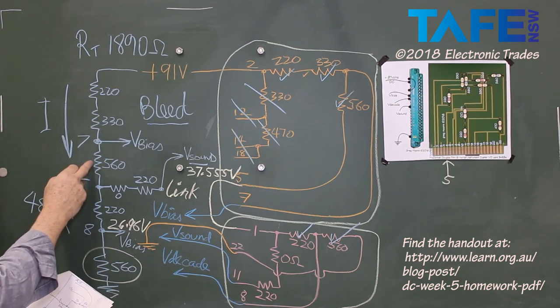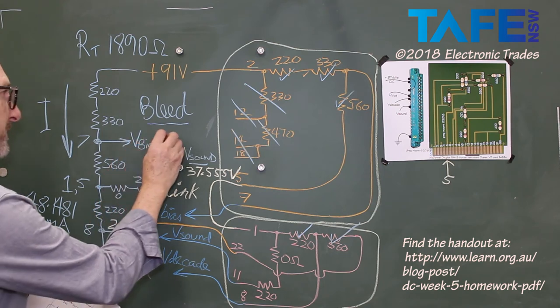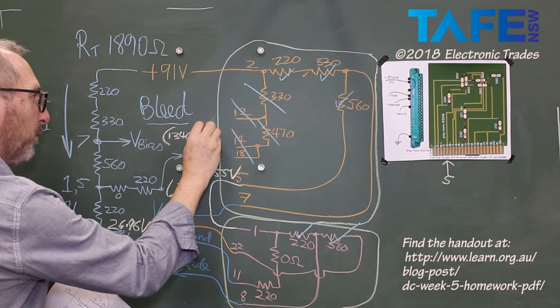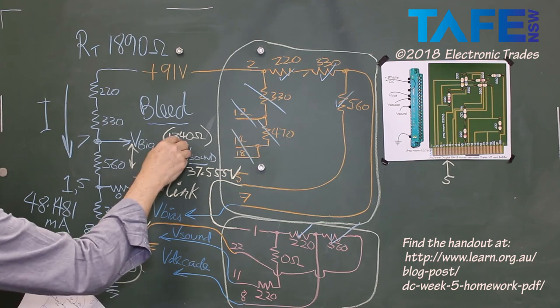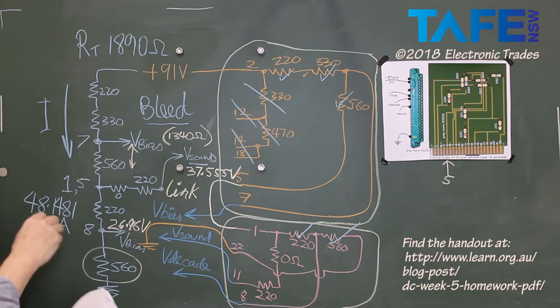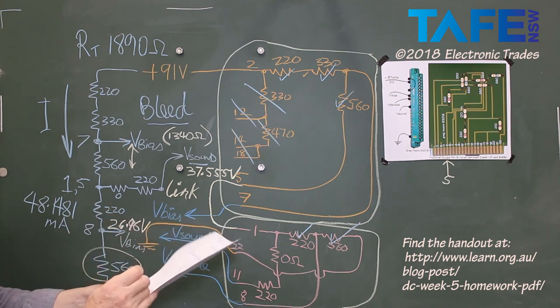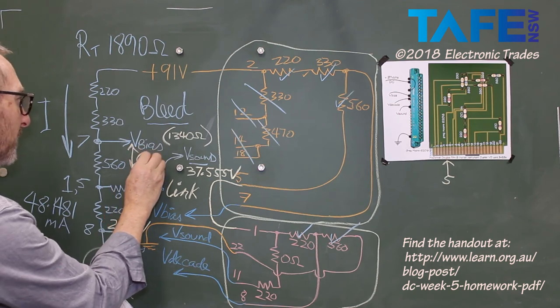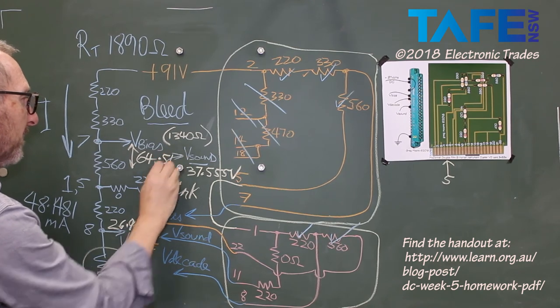Then finally we had to add the 560 to that 780 to get a resistance of 1340 ohms. And I'll just put that in brackets here. I've got 1340 ohms with respect to ground, from here to ground. So that 1340 ohms I have to multiply by 48.1481 milliamps. And that'll finally give me for V-bias, 64.51 volts. 64.51 volts.